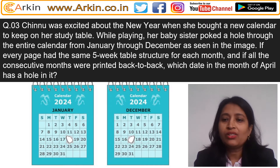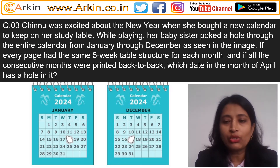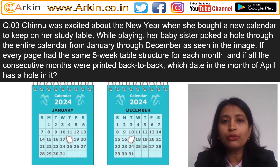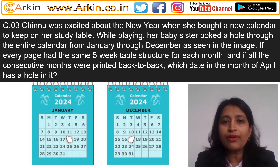Let's do question number three of UC 2021 question paper. Chino was excited about the new year when she bought a new calendar for her study table. While playing, her baby sister poked a hole through the entire calendar from January through December, as seen in the image. If every page has the same five-week table structure and all consecutive months were printed back to back, which date in April has a hole in it?